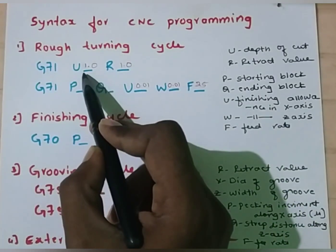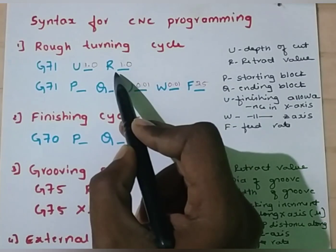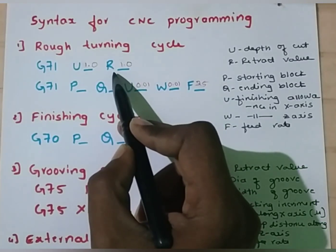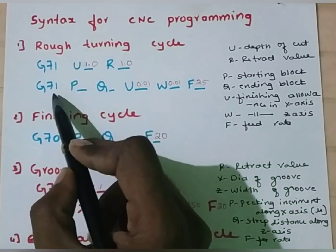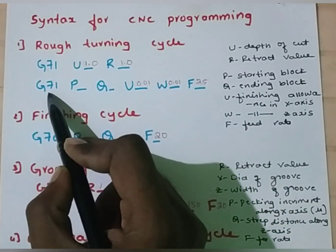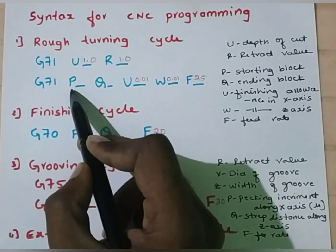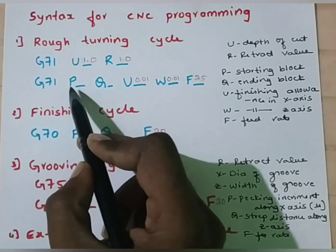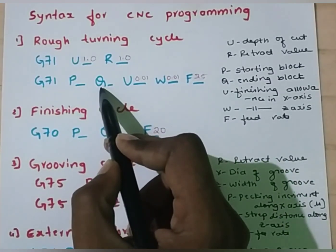U is depth of cut — I am going to assume it as 1 mm. R is nothing but retract value; again I am going to assume it as 1 mm. In the second line, again G71 — that is rough turning cycle — where P indicates starting block number and Q indicates ending block number.